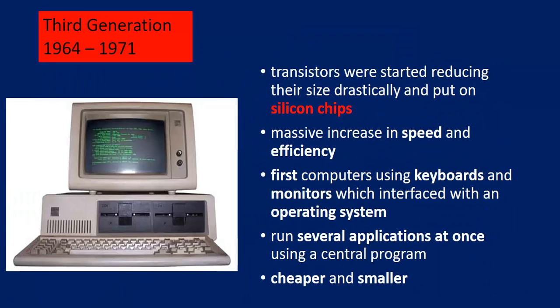The third generation had silicon chips as the biggest development. During the third generation, transistors were embedded in chips. There was a massive increase in speed and efficiency. Fast computers using keyboard and monitor were introduced in this generation. The operating system was also used, allowing several applications to run at once, and computers became cheaper and smaller.